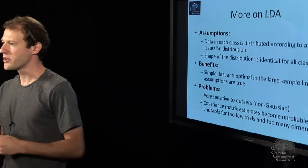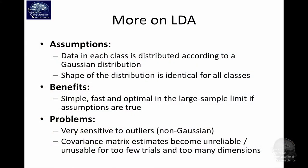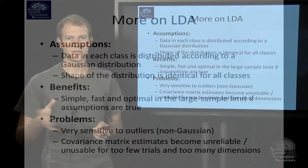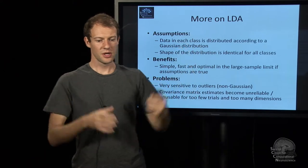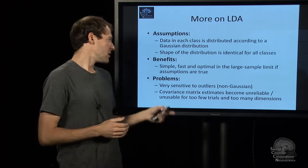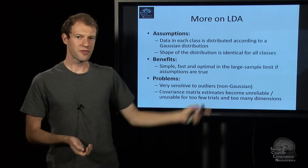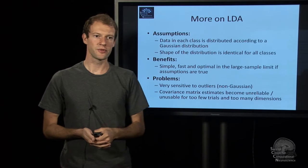There's a few caveats with this whole process. It's very simple and it works very well, but it assumes that the data in each class or under each condition is Gaussian distributed in some multivariate sense. This of course only works well to the extent that this assumption is fulfilled. The other assumption is that the shape of the distribution, the shape of the point cloud, is identical for all classes. If one point cloud is larger than the other, the actual optimal kind of hyperplane is not really a plane anymore, but it's a curve.